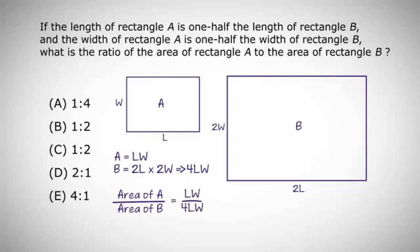The first area is LW. The second area is 4LW. So our ratio will read LW over 4LW. Our unknown values will cancel out, leaving us with a ratio of 1 to 4, which matches up with answer choice A.